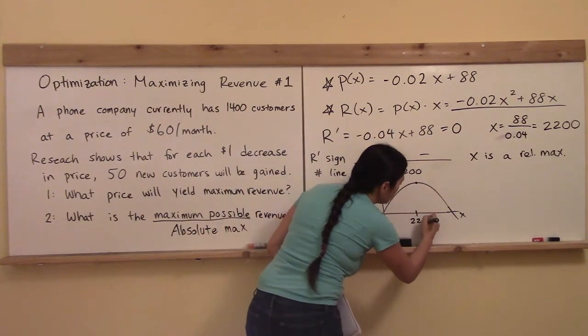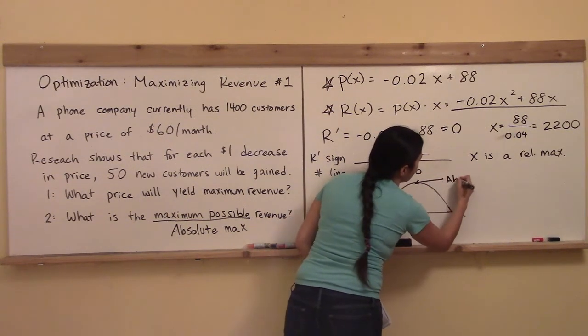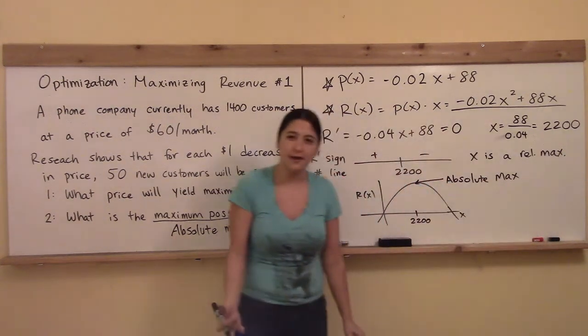Right here. When x is equal to 2200, this not only is a relative max, but this is the absolute max. And how do I know that? I mean, I didn't check the end points, did I?